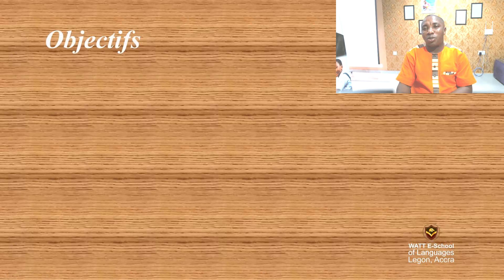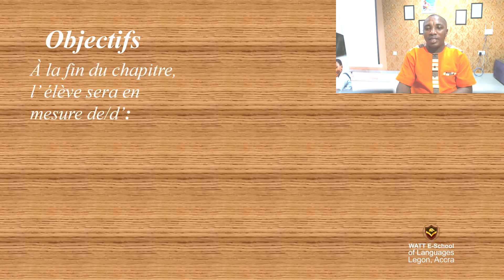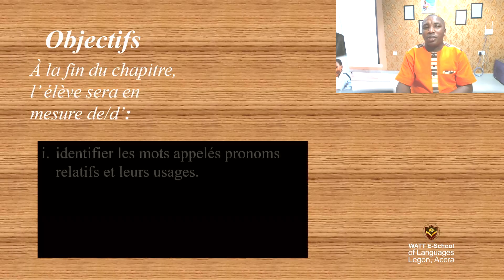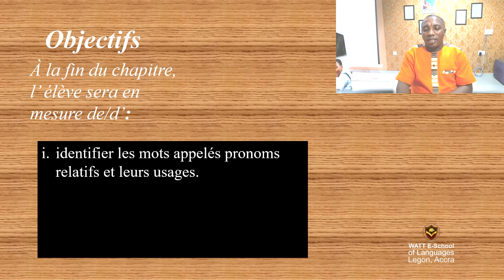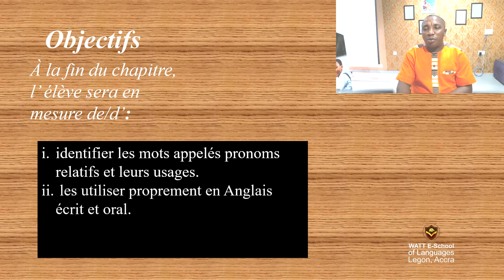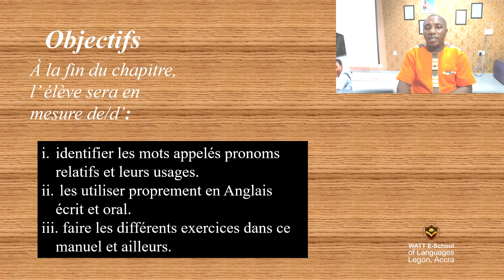Les objectifs de cette leçon sont les suivants. À la fin du chapitre, l'élève sera en mesure d'identifier les mots appelés pronoms relatifs et leurs usages, de les utiliser proprement en anglais écrit et oral, de faire les différents exercices dans ce manuel et ailleurs.